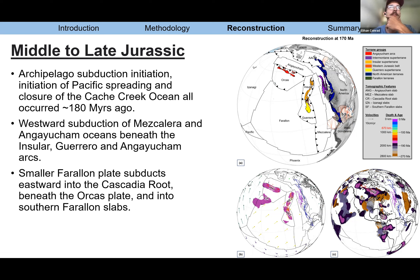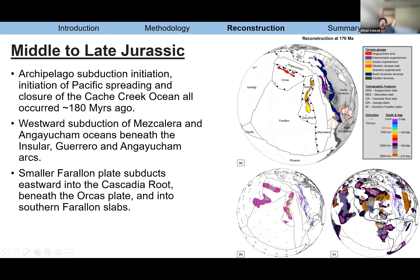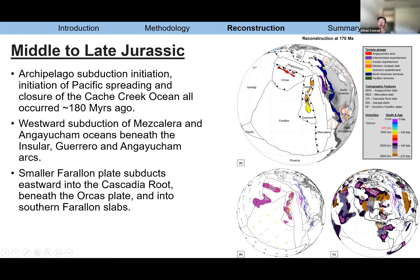It would have been super convenient if you had two different magmatic packages on either side of the terrain that you could say are related to subduction of the Farallon on one side and another plate on the other. But geology is usually not that clean. Also, this area from 170 million years ago has since been heavily intruded by plutons and metamorphosed, making it quite hard to tell what was going on before those reworking events.